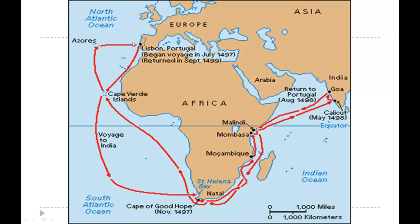Vasco da Gama started from Lisbon in 1497, came down to the Cape Verde Islands, rounded the Cape of Good Hope, kept going through Mozambique and Mombasa, and finally landed in Calcutta in 1498, then went to Goa in India. He stayed a few months and then returned — coming along the coast of Africa and sailing back up to the Azores and home to Portugal. It took him over two years.